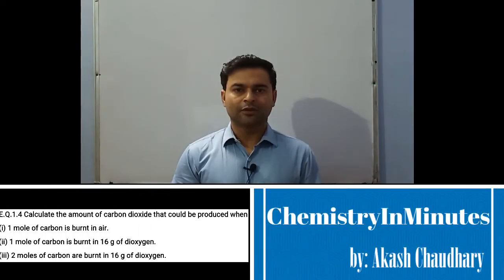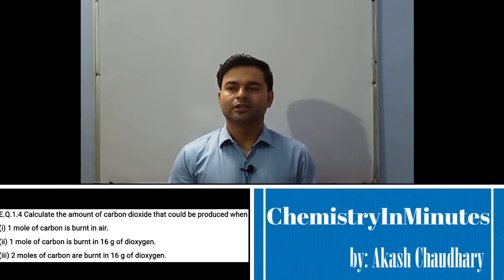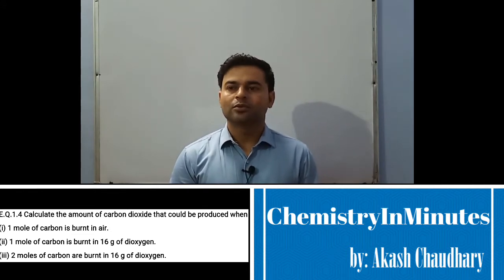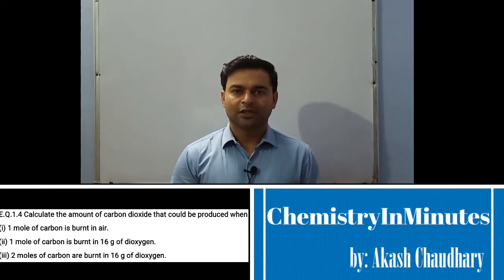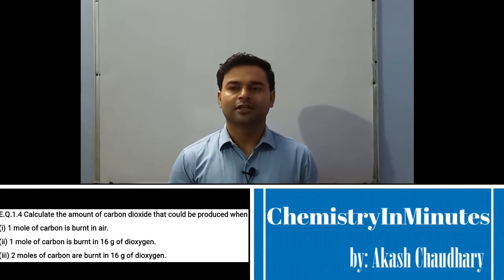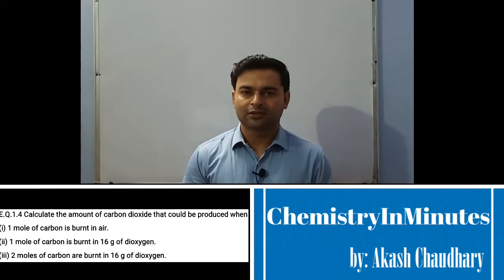Hello, my dear students. Welcome to Chemistry in Minutes. The question now appearing on your screen is exercise question 1.4. Calculate the amount of carbon dioxide that could be produced when: first, one mole of carbon is burnt in air; second, one mole of carbon is burnt in 16 gram dioxygen; and third, two moles of carbon are burnt in 16 gram of dioxygen.